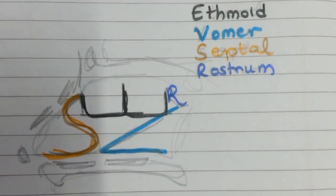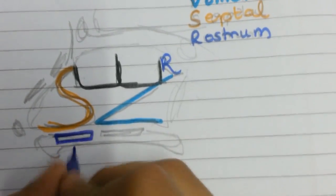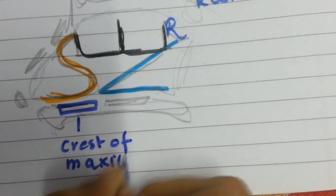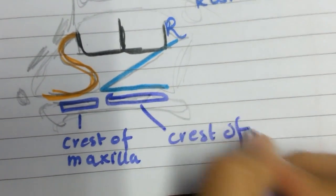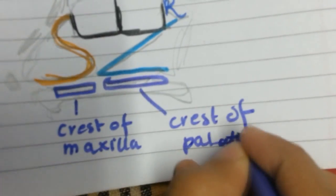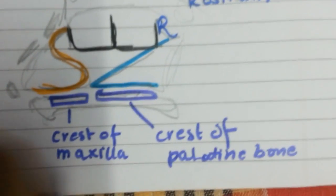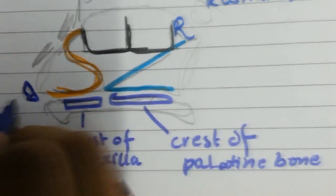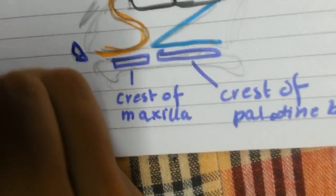This is the crest of the maxilla, then the crest of the palatine bone. This is the columella—like I said, you have to make it like a C so you remember C for columella.